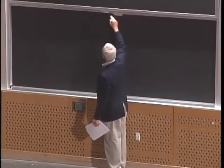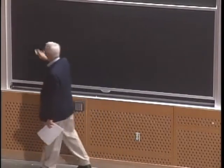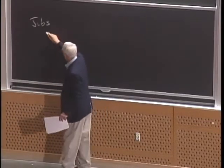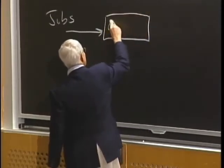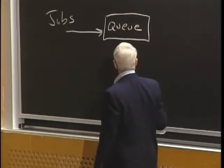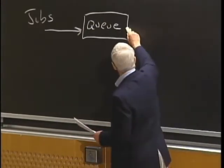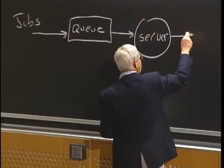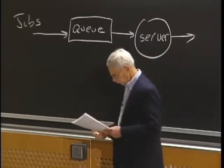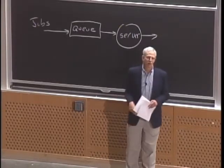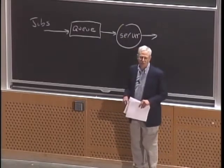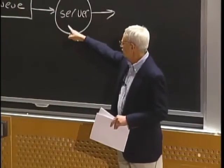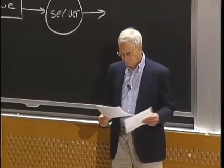If we think about how to model a system with queues, they're all modeled essentially the same way. You start with some jobs — work to be done. Those jobs enter a queue, wait around for a while, leave the queue one at a time, enter a server, and then depart. It can be much more complicated — multiple streams of jobs, multiple queues, multiple servers — but we typically break it down into components that look exactly like this.